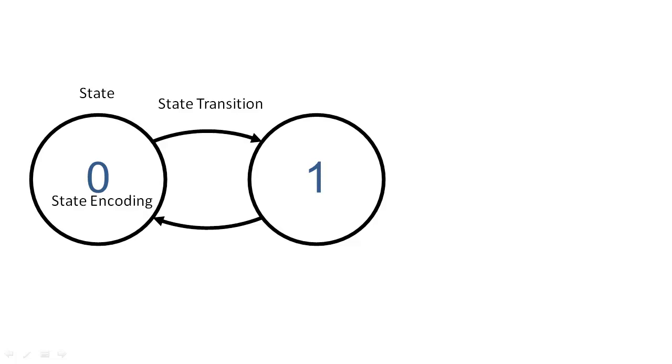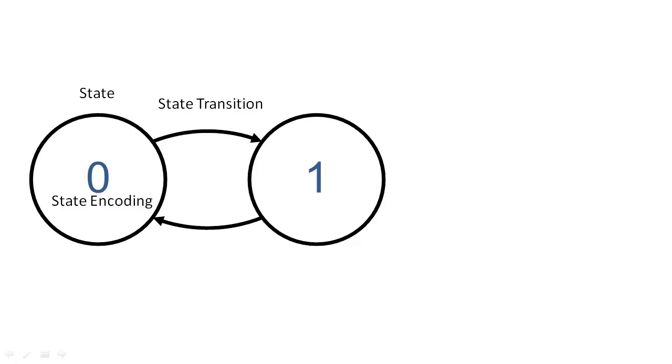In this example, because we have two states, we can uniquely encode both states with a single bit, or flip-flop. This bit is called a state variable. Because the flip-flop is edge-triggered, the state of the system can change only once per clock cycle. Finally, the combinational logic of the system manipulates the state and tells us how the state will transition on the clock edge.